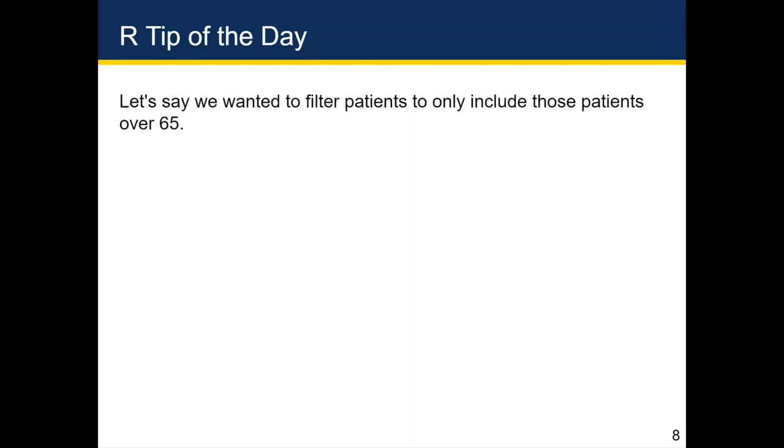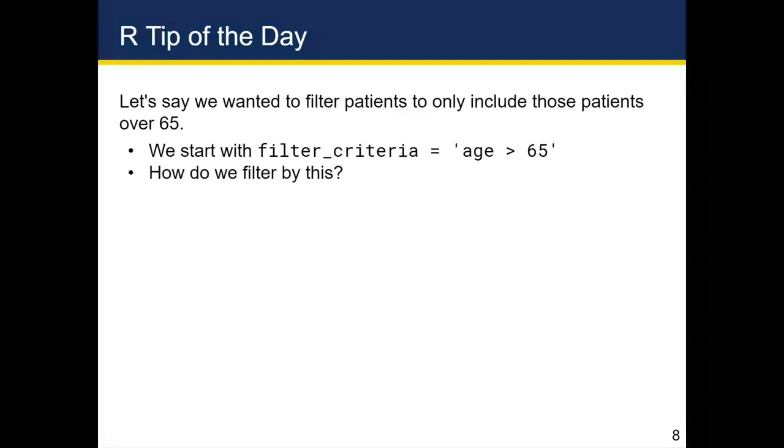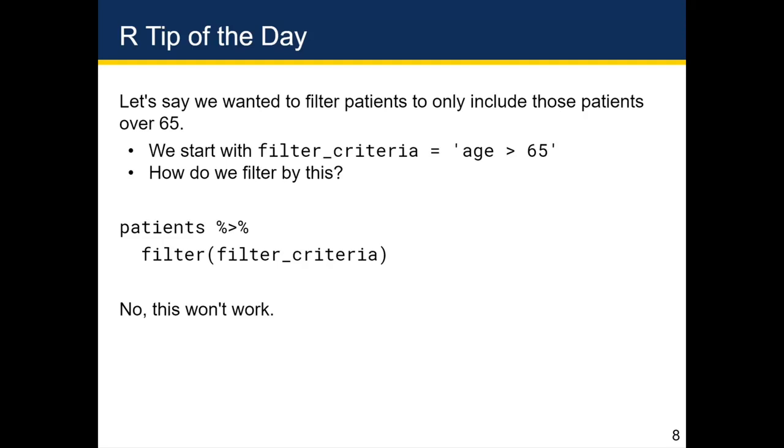Let's say we wanted to filter patients to only include those patients over 65. So we start with a variable filter criteria and we assign it the value age greater than 65 in quotes. How could we filter by filter criteria? So we could start with patients, then filter criteria, but this wouldn't work. And the reason this wouldn't work is that this is the equivalent of typing in patients then filter age greater than 65 in quotes. And since you can't have age greater than 65 in quotes in dplyr, this code wouldn't work.